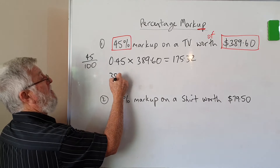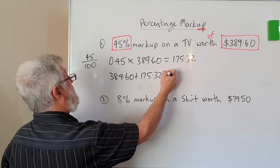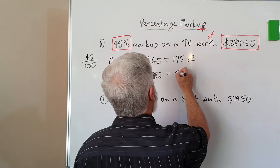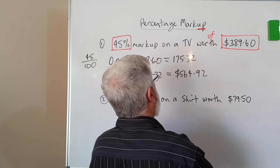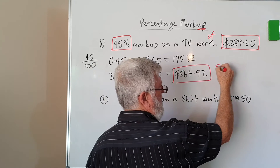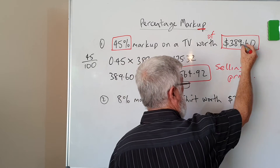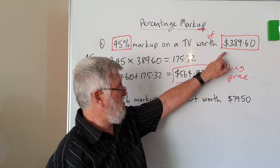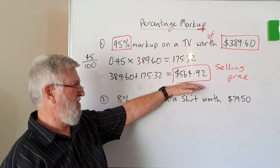So if I go $389.60 plus $175.32, which I could try to do in my head — I've written it down here — $564.92. So that's the selling price. If you bought it for this amount and you mark it up by 45%, you can see it's gone up by a fair bit, so it ends up selling for $564.92.